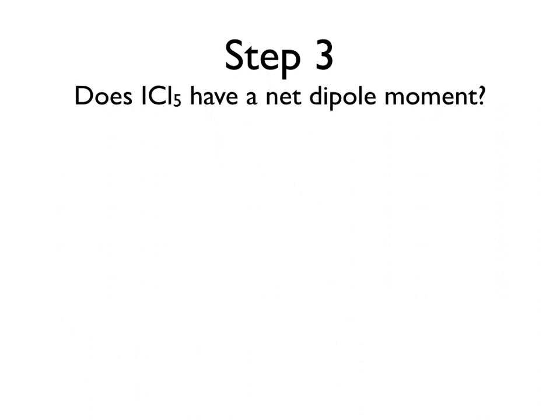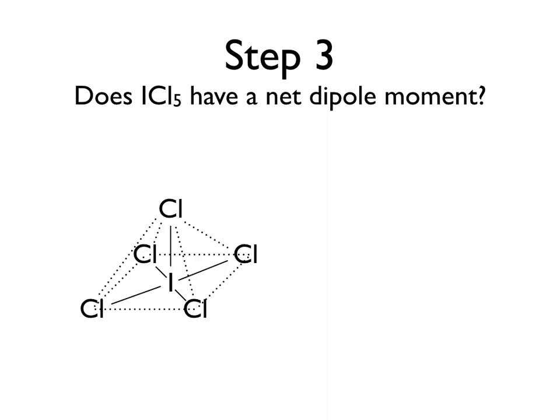Finally, let's consider whether this molecule has a net dipole moment. For that, let's turn to the 3D structure we created earlier. To determine whether it has a net dipole moment, we first need to consider its individual dipole moments. Let's look at this molecule from two vantage points. First, if viewed from above, we'll see an iodine atom in the center with four chlorine atoms surrounding it equally on each side.